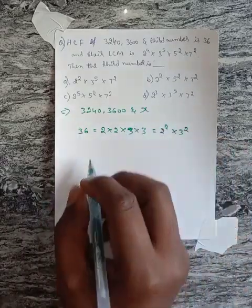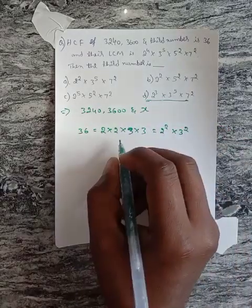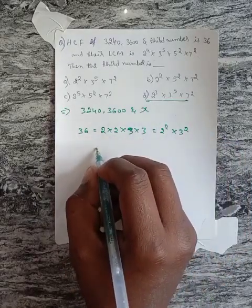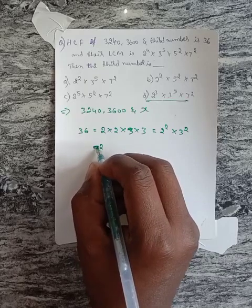If we take option D, it will become 72, not 36.